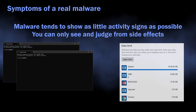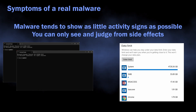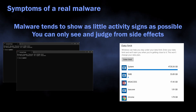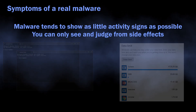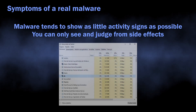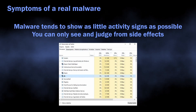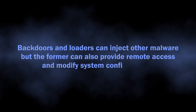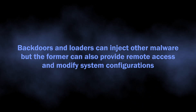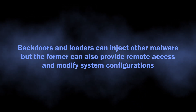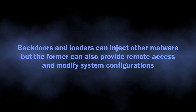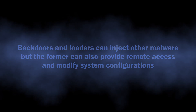Malware tries to leave as little visible clues as possible so it can stay undetected for longer. However, you can see console windows blinking from time to time, your internet traffic consumption getting exponentially higher, and a lot of strange processes popping up in the task manager. Both backdoors and loaders can inject other malware into your system, but backdoors also provide remote access and can mess with system settings.